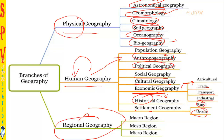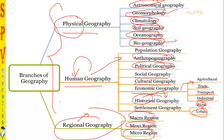We also have historical geography, which covers history's influence on geography, and settlement geography, where rural and urban patterns are studied. In regional geography, we have macro regional, meso regional, and micro regional geography. These are all the concepts that will be covered in this course.